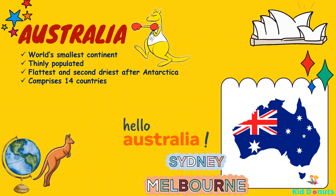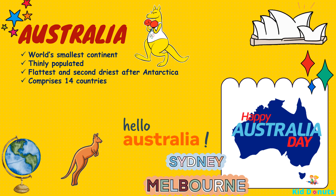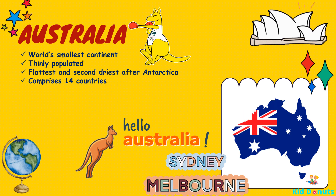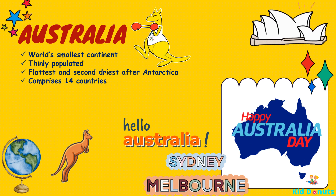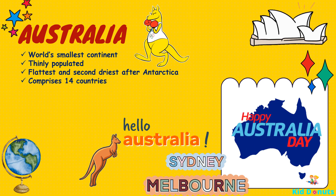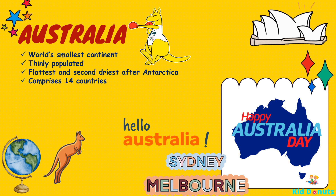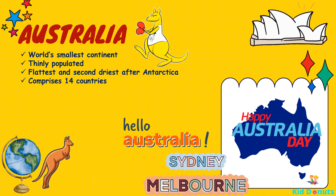Australia is like a living laboratory. This is because when the continent started breaking away from Antarctica around 60 million years ago, it carried animals that developed into creatures unique to the region.